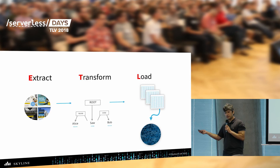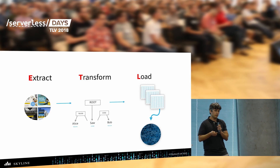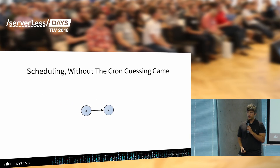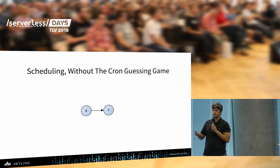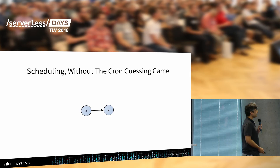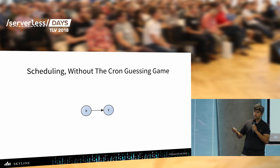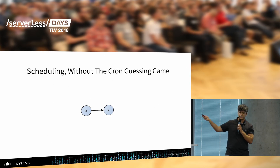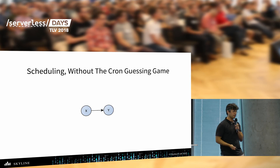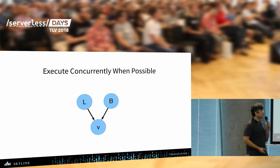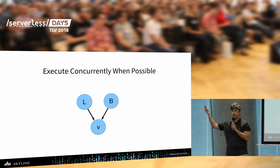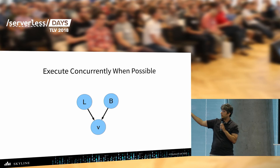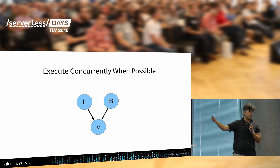Each of these ETLs at Skyline is a standalone Go application which is Dockerized, so they can run inside Docker containers. Our scheduling needs require these things running all the time — some daily, some monthly, some weekly. We have dependencies between them and we don't want to do the Cron guessing game. We want to make sure that when process Y runs, it's only after — and immediately after — process X finishes. We also want to use concurrency: fetching weather data isn't dependent on crime rate data, so we can fetch both in parallel, and when both are finished, call the machine learning server to generate predictions.